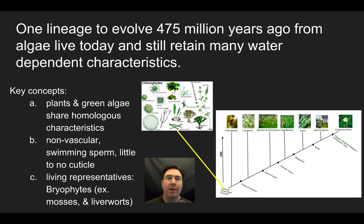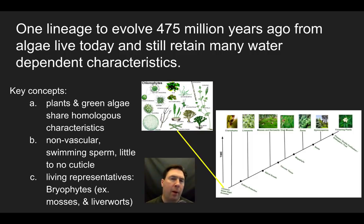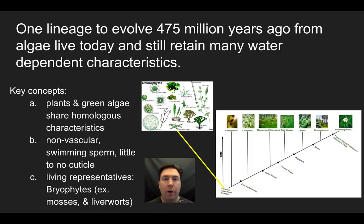As we emerge into the first plants, we start seeing things like mosses and their relatives. Mosses are non-vascular plants, meaning they have no tissue to conduct water inside the plant. They don't have true roots, true leaves, or true veins. They live in very wet environments — shady, damp, wooded areas — and their tissues must be constantly bathed in water. They have swimming sperm that fertilize from male gametes swimming to female gametes, and they have very little or no waxy cuticle to prevent evaporation.